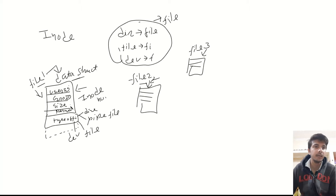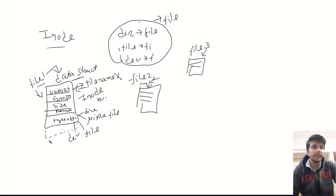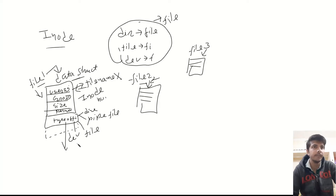Note that in the metadata information, the file name is not included. There are also other types of files — for example, character device files, block device files, and like that. I will have a separate video in which I will explain all types of files. So this is about the basics of the inode.